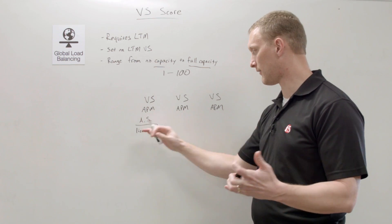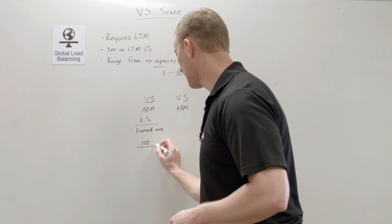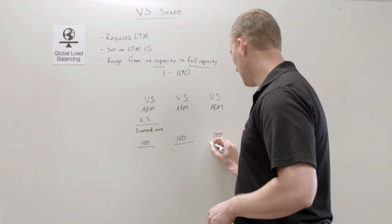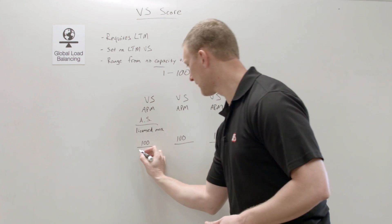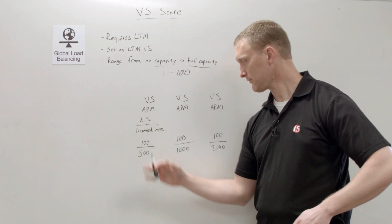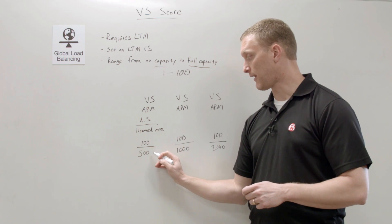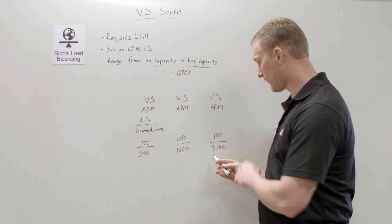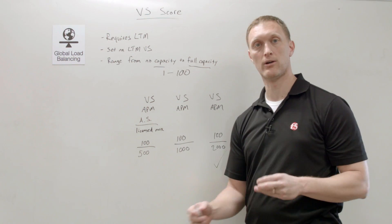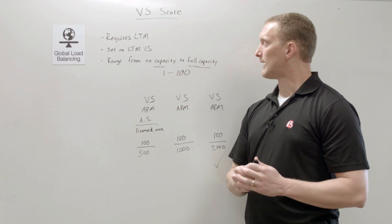For example, let's say all three virtual servers have 100 active sessions each. Virtual server one has 500 licensed, virtual server two has 1,000 licensed, and virtual server three has 2,000 licensed. That gives 100/500, 100/1000, and 100/2000 — so virtual server three has the most capacity available and will be selected because it has the highest score.